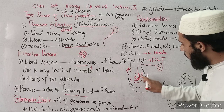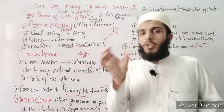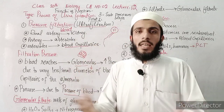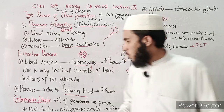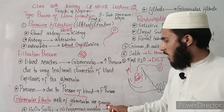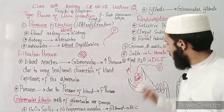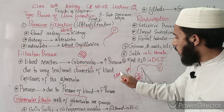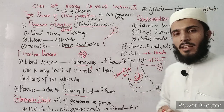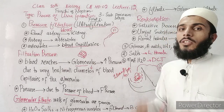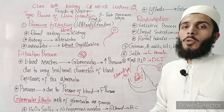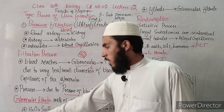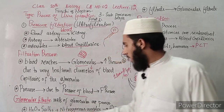The walls of the glomerulus capillaries are porous. Due to this high pressure and porous walls, filtration occurs. Water and nitrogenous waste substances are filtered through the walls. Blood flows through the kidney, and the pressure forces materials through the porous capillary walls into the surrounding Bowman's capsule.